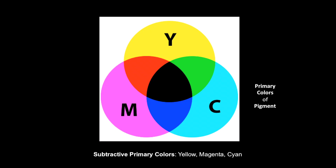The subtractive primaries are called subtractive because when you subtract — pull them away — that's when you get white. Conversely, when you add them together you get black. These are essentially the primary colors of pigment. Like the additive primaries, overlapping them: yellow and magenta give red, yellow and cyan give green, and cyan and magenta give blue.